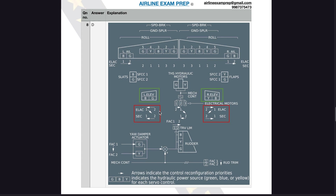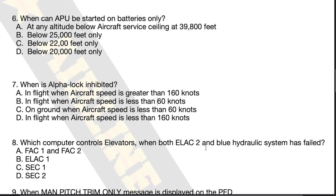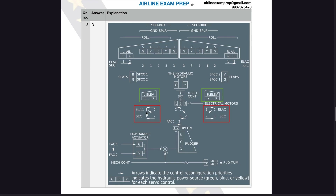What happens if ELAC-2 fails? As per the diagram, ELAC-1 starts working and is now responsible for the left elevator. ELAC-1 is connected to the blue hydraulics. So the second ELAC-2 fails, ELAC-1 takes over and uses the blue hydraulics. If both ELAC-2 and ELAC-1 fail, it switches to the SEC-2 system, which is linked to the green hydraulics. SEC-2 uses the green hydraulics to move the left elevator. And finally, if you lose SEC-2 as well, SEC-1 takes over, using the blue hydraulics to move the left elevator.